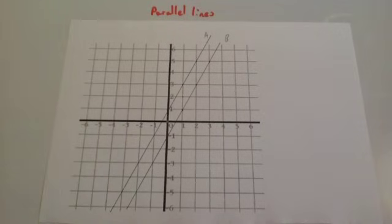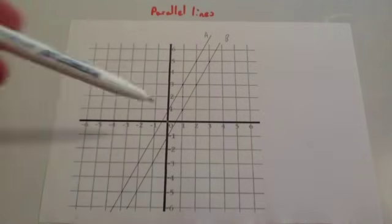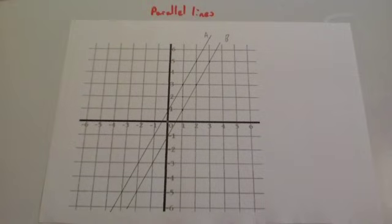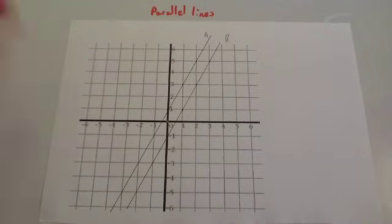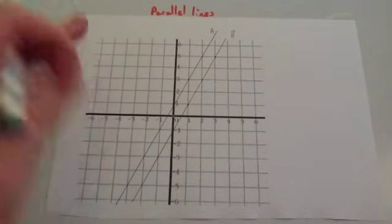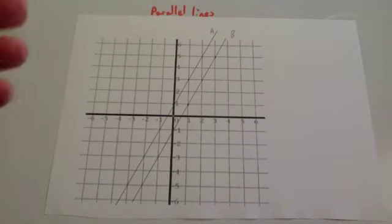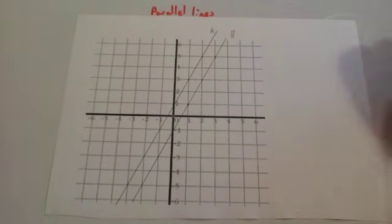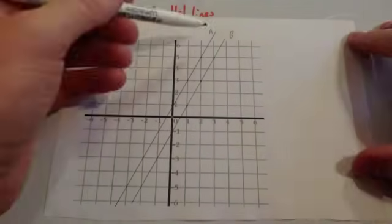In this video we're going to look at parallel lines. I've drawn two graphs, line A and line B, and as you can see they're clearly parallel. They will never cross each other, they're going in the same direction. So let's work out their equations.